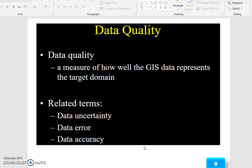Data quality is a measure of how well the GIS data represents the target domain. Related terms include data uncertainty, data error, and data accuracy.